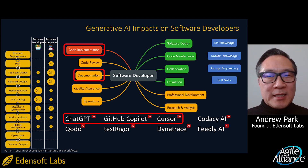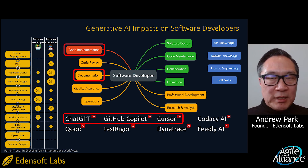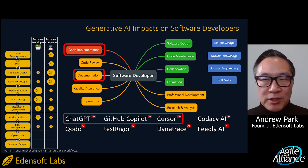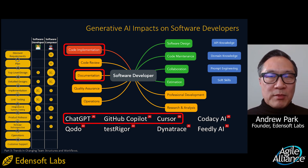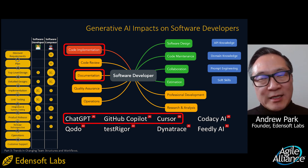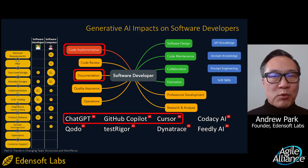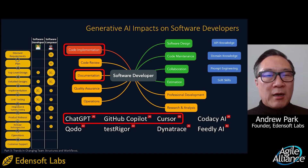Generative AI plays a significant role in both code implementation and documentation, and our developers make extensive use of GitHub Copilot. It excels in inline code suggestions, completing functions, and generating basic documentation directly within the IDE based on prompts and the surrounding code context. It's a very popular and empowering tool — business leaders, you've got to adopt something like this. It significantly accelerates coding tasks by providing relevant code completions and reducing boilerplate work across various languages and frameworks.